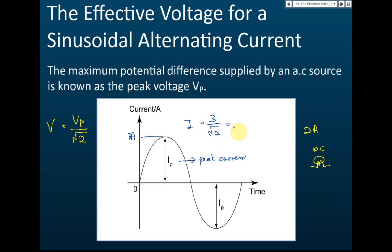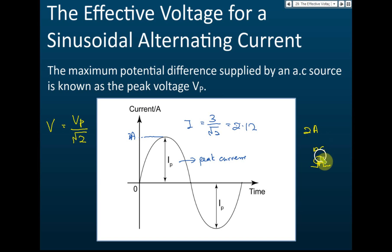Using your calculator: the effective current I equals Ip = 3 amperes divided by the square root of 2, which gives 2.12 amperes. Since this is 2.12 and the direct current is 2 amperes, they are very close — the brightness of the two bulbs will be about the same.